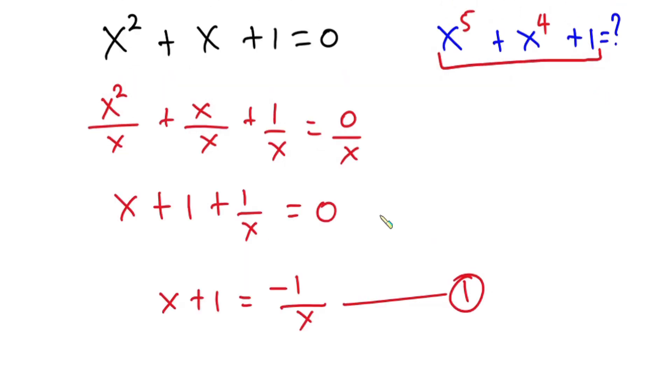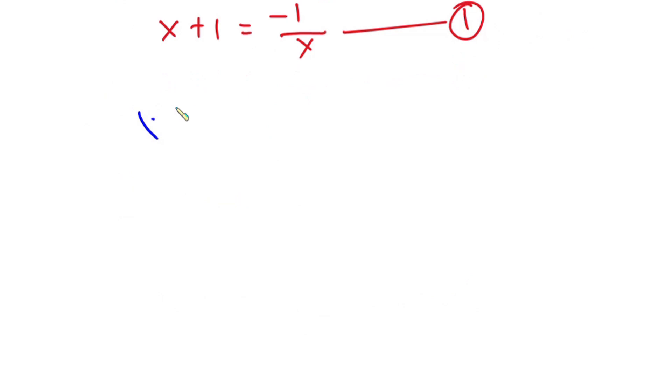Now let's consider this expression. So we have x to the fifth power plus x to the fourth power plus 1. Now we can take x to the fourth power common, so we have x plus 1, then we have this 1 over here.